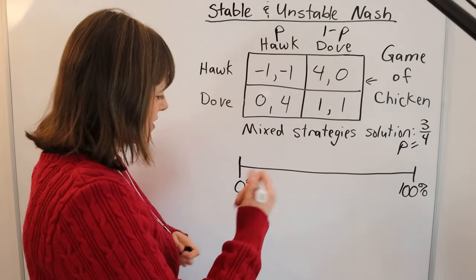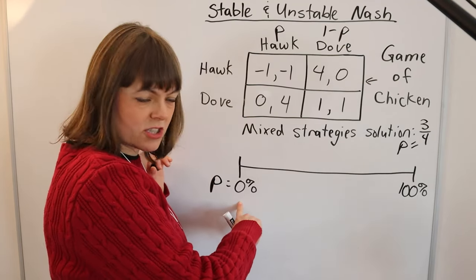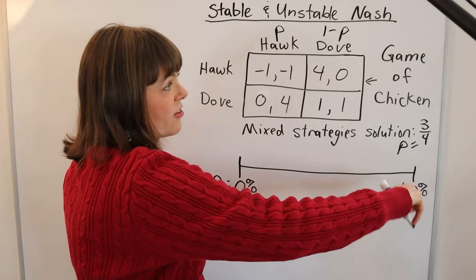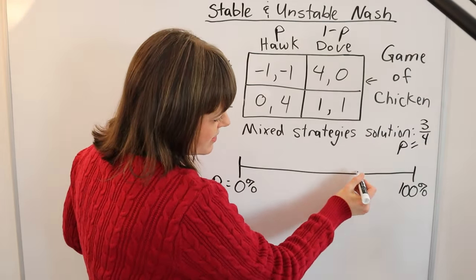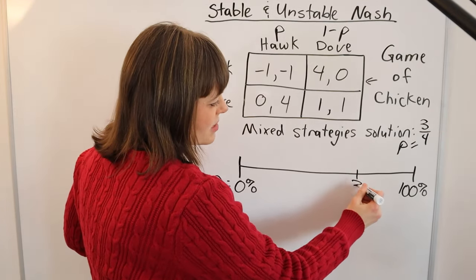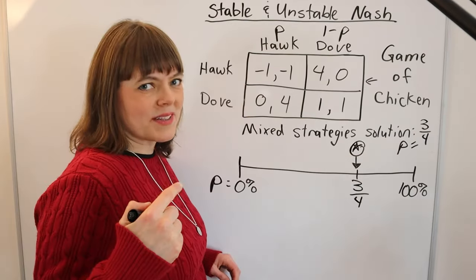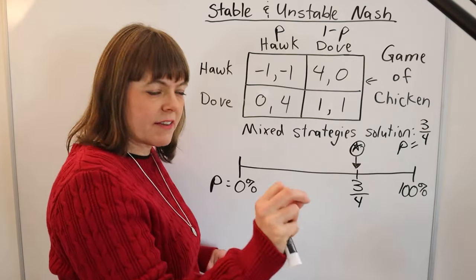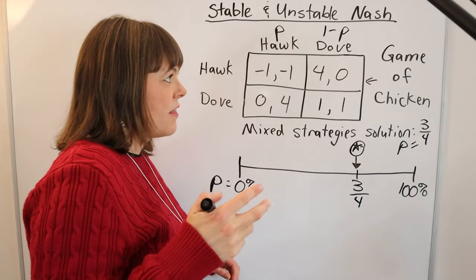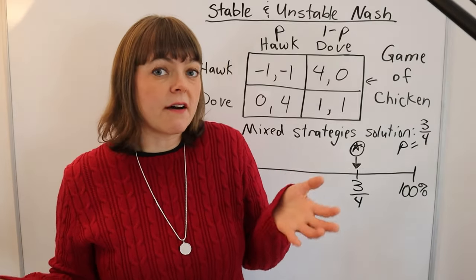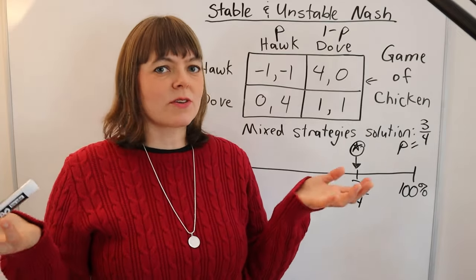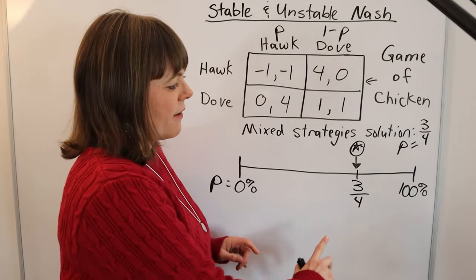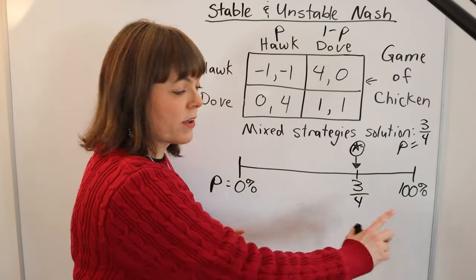The spectrum goes from p equals zero — 100% doves — up to p equals 100% with no doves, and we place our Nash equilibrium at 75% because we've already solved for that mixed strategies Nash equilibrium. At exactly 75% hawks and 25% doves, there's no advantage to being a hawk or a dove. Any one animal is indifferent between those two strategies; they both have on average the same number of children and grandchildren. So if you're always exactly at 75%, you'll never move in either direction.